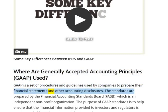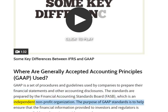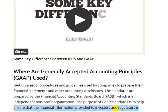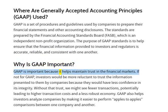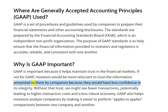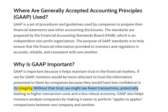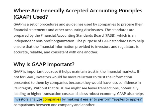The standards are prepared by the Financial Accounting Standards Board, FASB, which is an independent non-profit. The purpose of GAAP standards is to help ensure that the financial information provided to investors and regulators is accurate, reliable, and consistent with one another. Why is GAAP important? GAAP is important because it helps maintain trust in the financial markets. Without GAAP, investors would be more reluctant to trust the information presented by companies because they would have less confidence in its integrity. Without that trust, we might see fewer transactions, potentially leading to higher transaction costs and a less robust economy. GAAP also helps investors analyze companies by making it easier to perform apples-to-apples comparisons between one company and another.